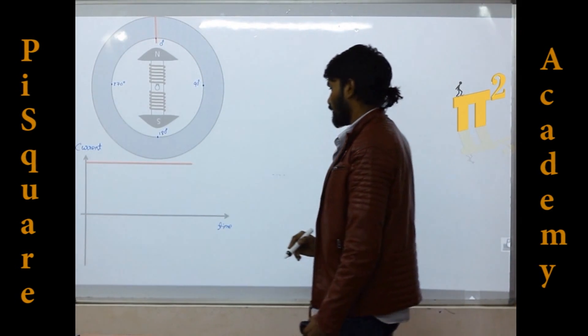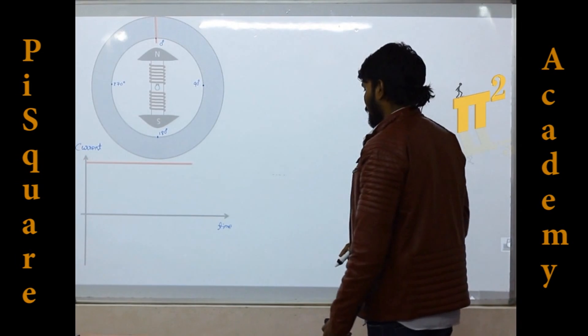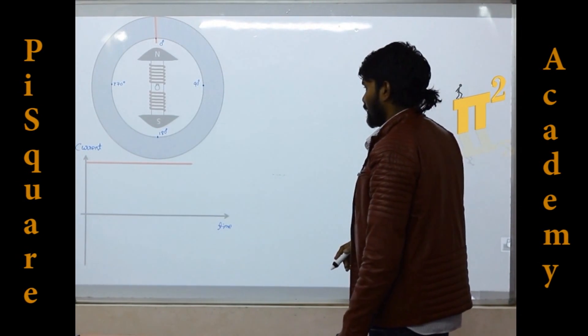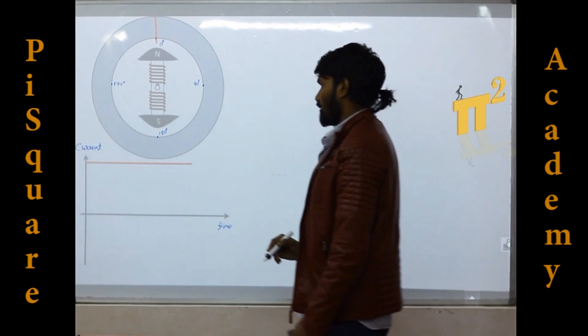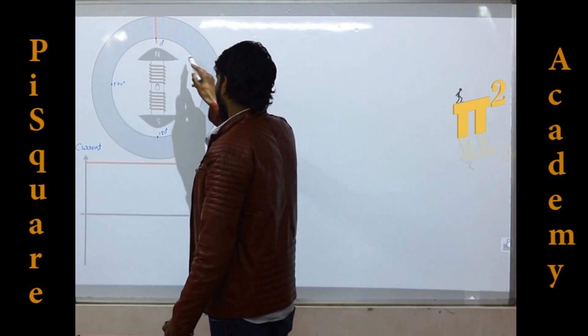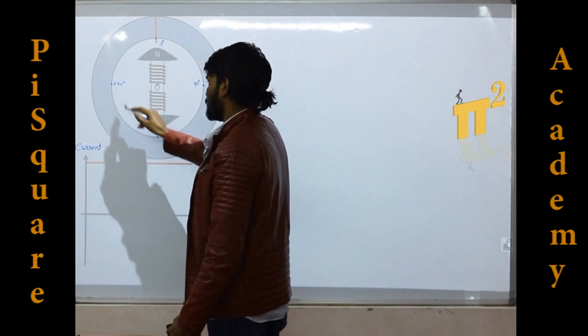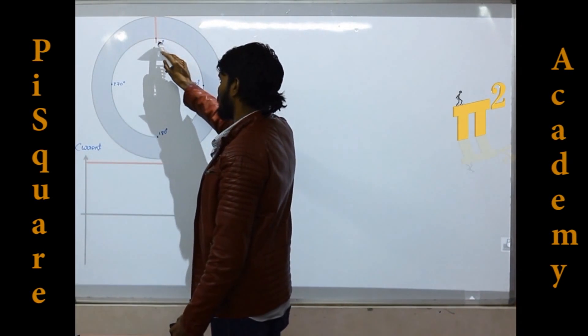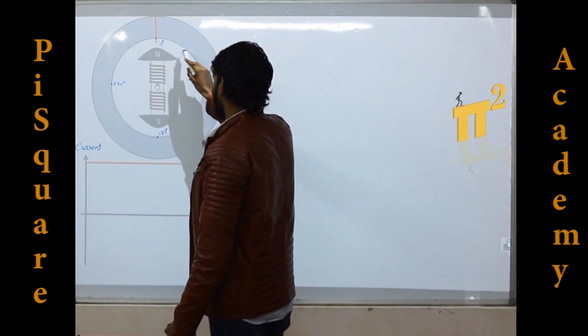Now let's check the flux density at these points. Means we are checking now the flux density around the space.